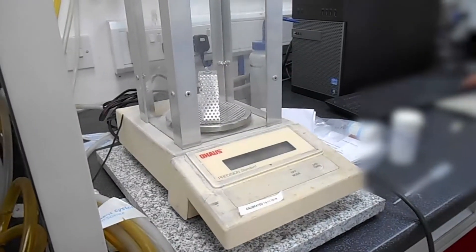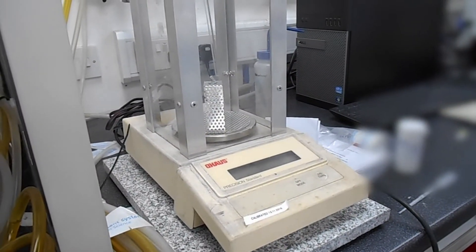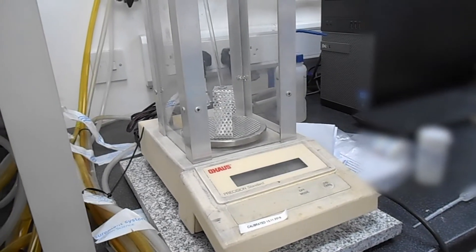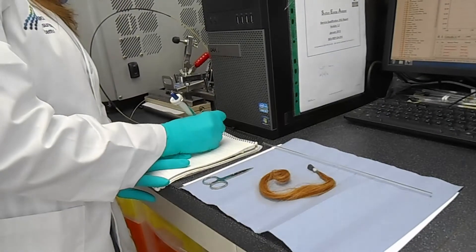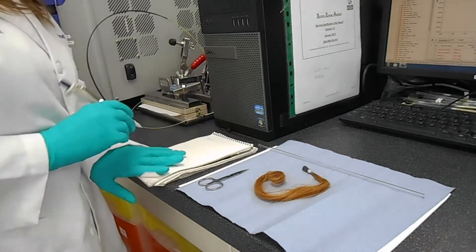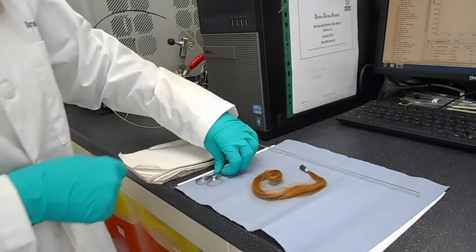The first thing that we need to do before the experiment is to weigh an empty column. We should record the measurement so we are going to be able to detect how much sample we are going to use.